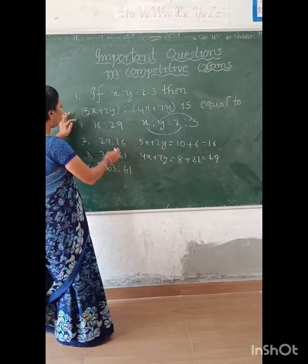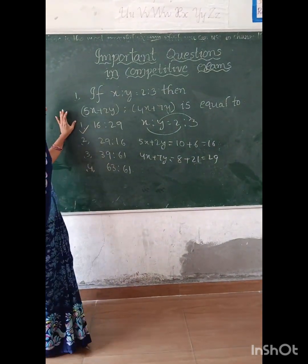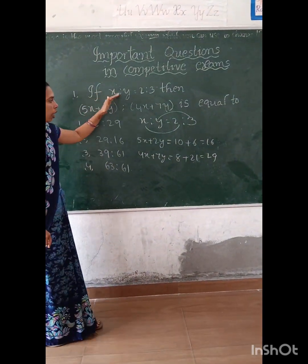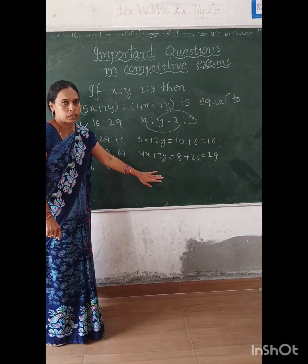So 21 plus 8 equals 29. The first one is the right answer. Okay, in the competitive exam example, it is easy to check.